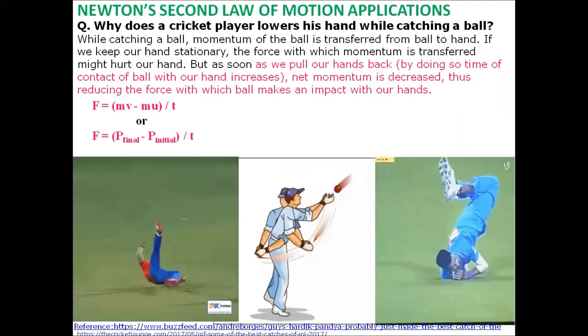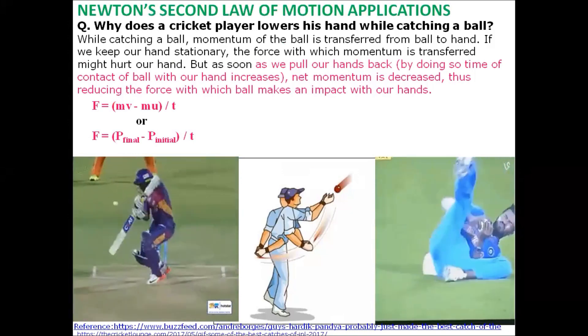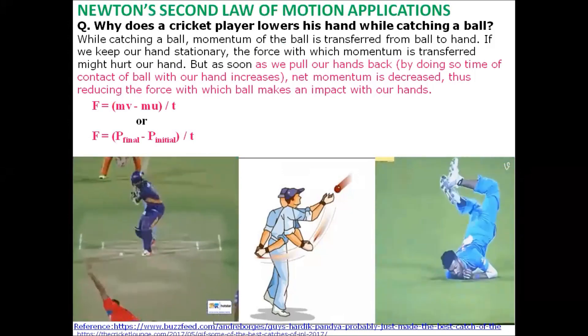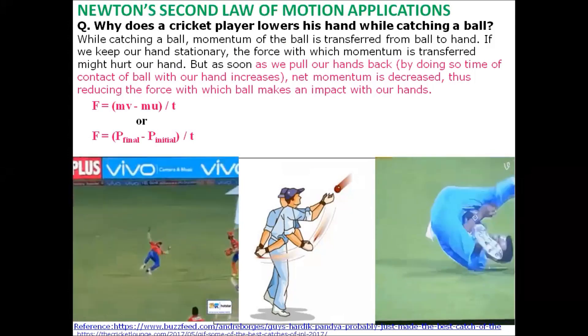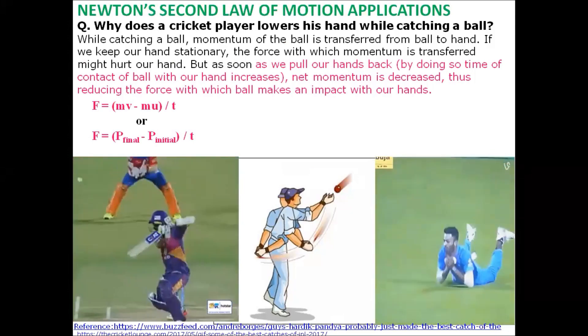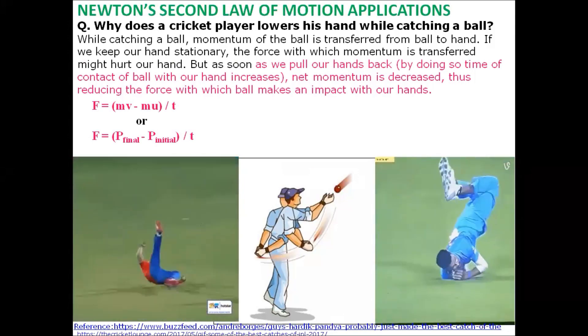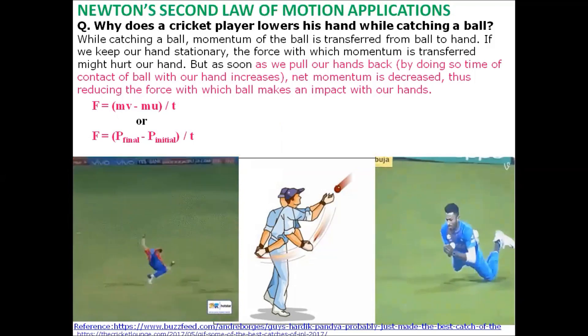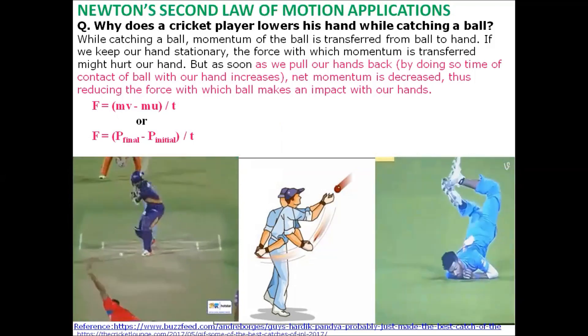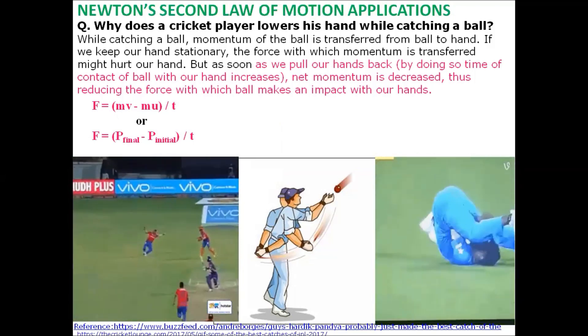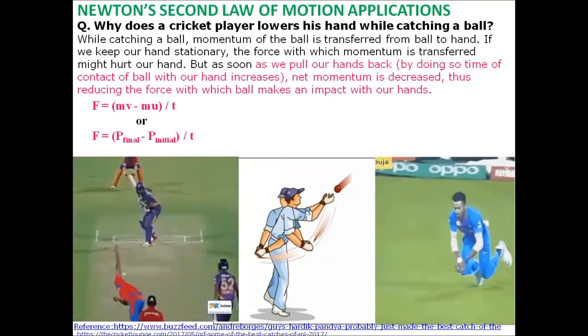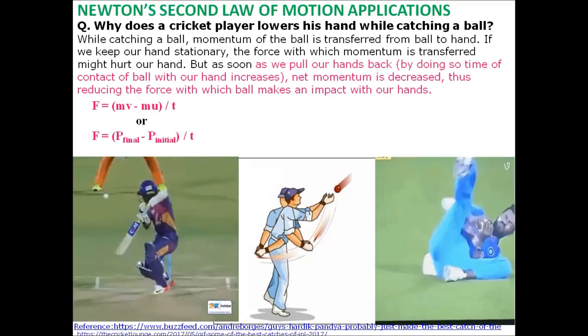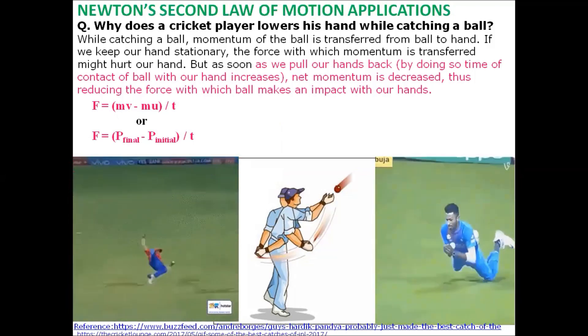Newton's second law of motion applications. It has been observed that a cricket player lowers his hand while catching a fast moving ball. If a player keeps his hand stationary while catching a ball, then the force with which momentum is transferred might hurt the player's hand. But if the player lowers his hand back, then time of contact with the ball increases and net momentum is decreased, and the player comfortably grabs the ball.